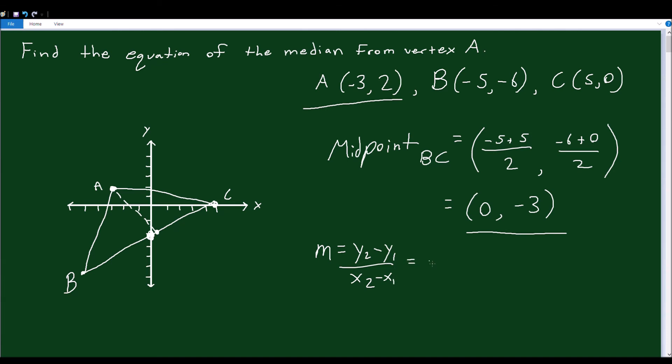So I'm going to say negative 3 minus 2, negative 3 minus 2, and 0 minus negative 3. 0 minus negative 3. And that's equal to negative 5 over positive 3. So that's our slope.